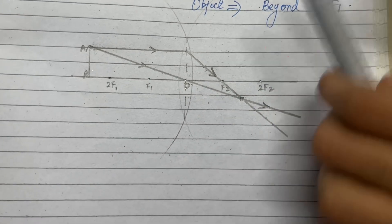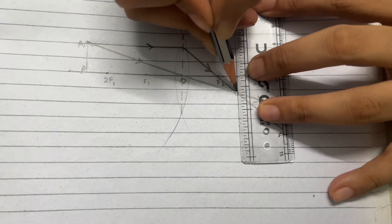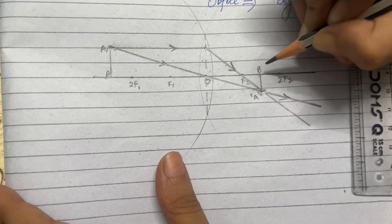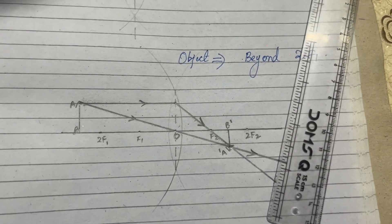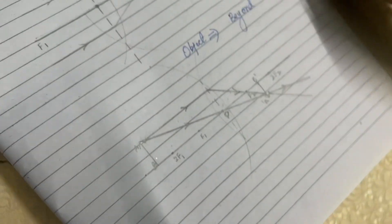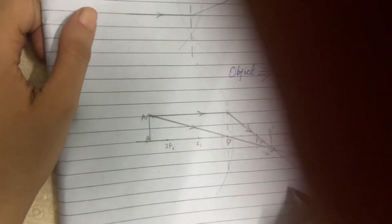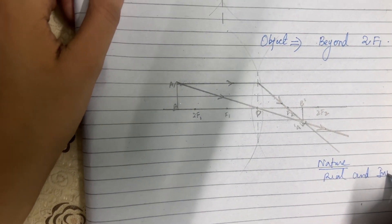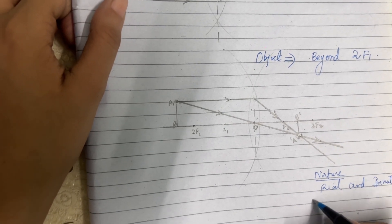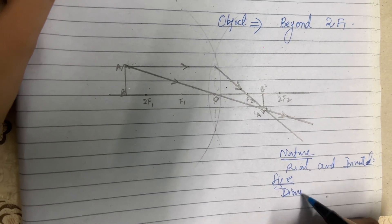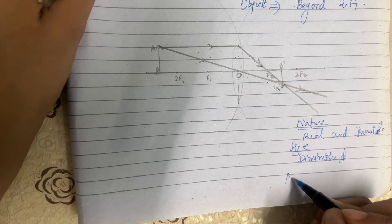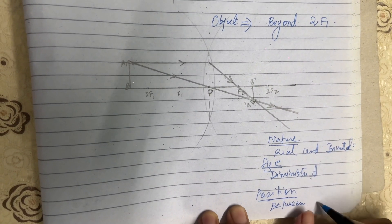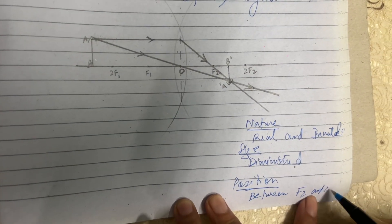Here the two rays are meeting, and here is the image formed — obviously it is inverted, so this is A-dash B-dash. The characteristics of the image formed are: nature — real and inverted; size — diminished, not highly diminished but diminished. And the position, from the diagram, you can see it is between F2 and 2F2.